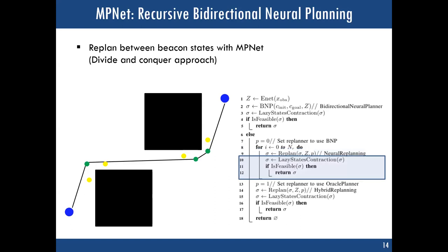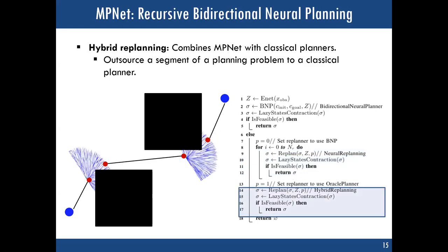Once we have all connectable edges, we again do branch and bound and throw away unnecessary states, which leads to a good quality path solution and helps speed up the process. In cases where MPNet wasn't able to find a path solution for one of the sub-problems, we outsource them to a classical planner such as RRT*. Our planner has already decomposed the bigger problem into a smaller one, so only that segment is outsourced. This allows us to retain MPNet's computational benefits while granting worst-case theoretical guarantees — if a path solution exists, MPNet will definitely find it.